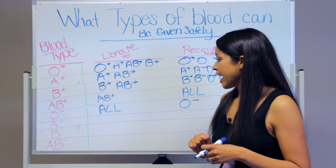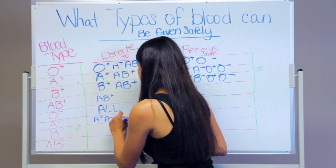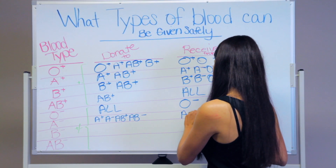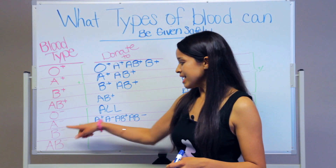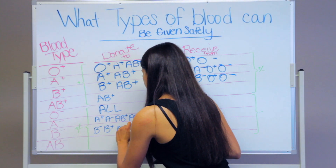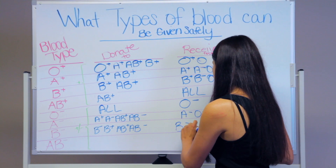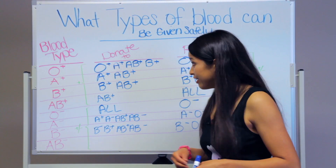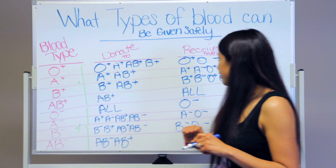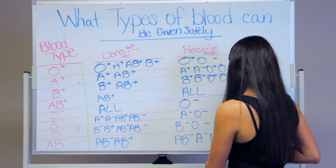A negative can donate to A positive, A negative, AB positive, and AB negative. A negative can receive blood from A negative and O negative. B negative can donate to B negative, B positive, AB positive, and AB negative. B negative can receive blood from B negative and O negative. AB negative can donate to AB negative and AB positive, and can receive blood from AB negative, A negative, B negative, and O negative.